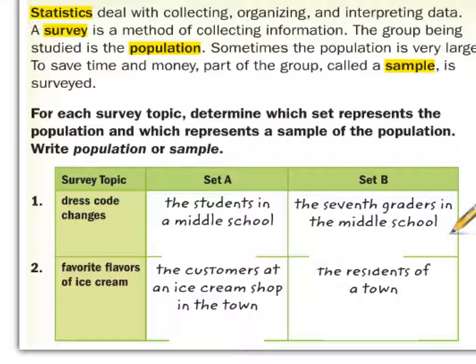Let's look at an example: determine which set represents a population and which is a sample. We have 'students in a middle school' — that would be everyone in the school, so that's a population. 'Seventh graders in the middle school' would be a sample of the middle school.